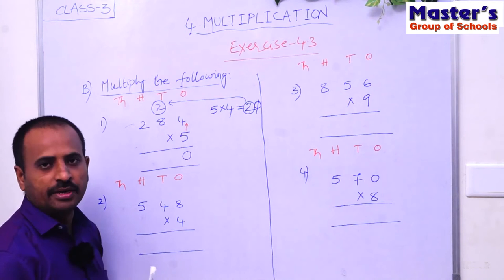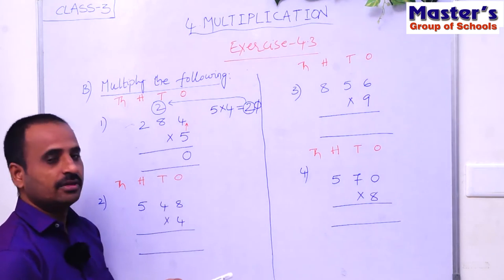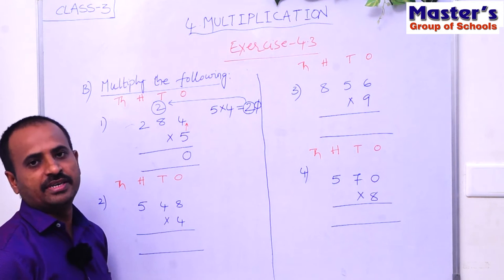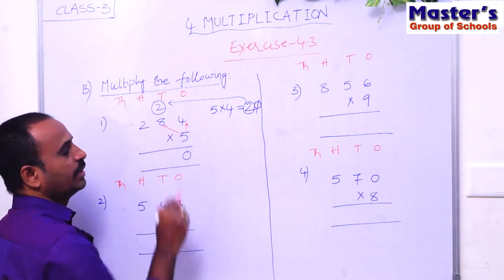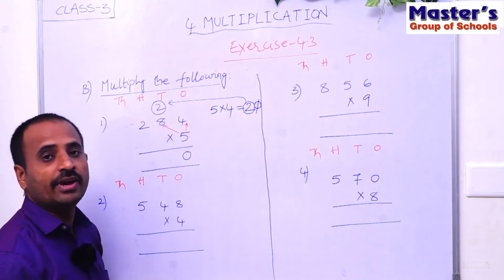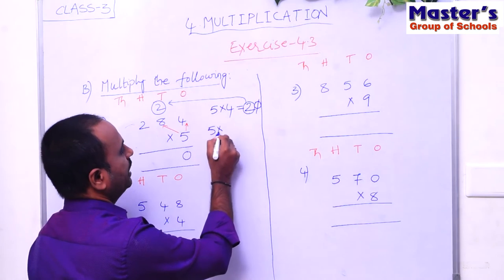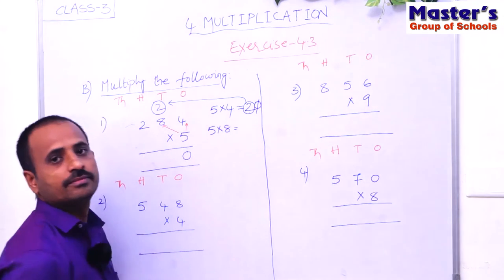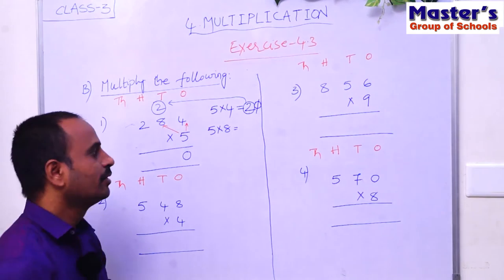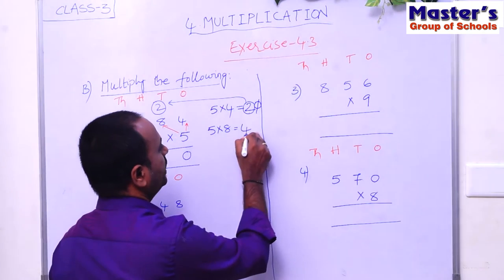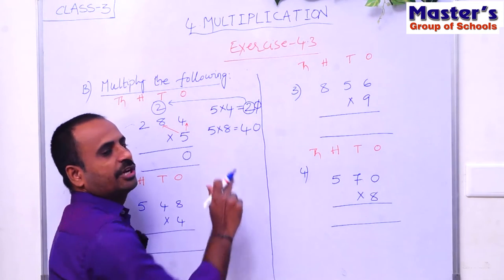The digit in tens place is 8, so multiply 8 with 5 — that is 5 × 8. Children, 5 eights are 40, and 40 is also a two-digit number.